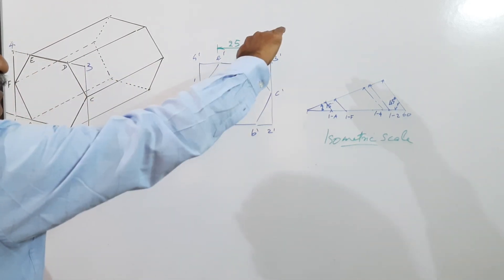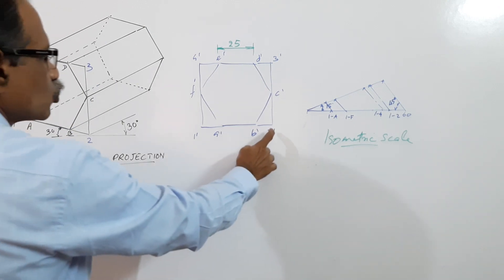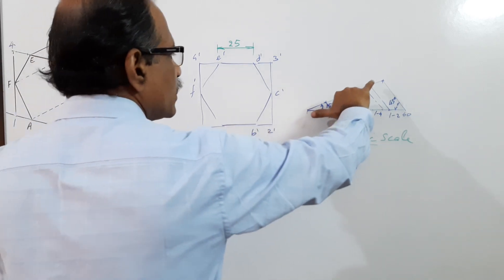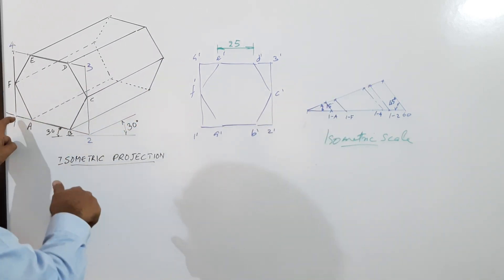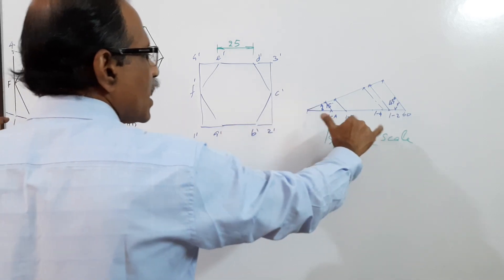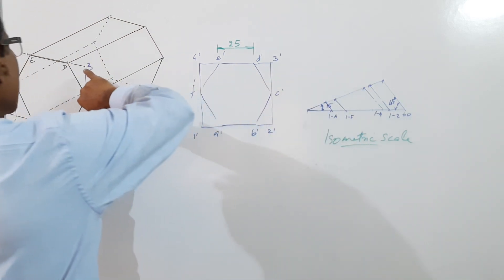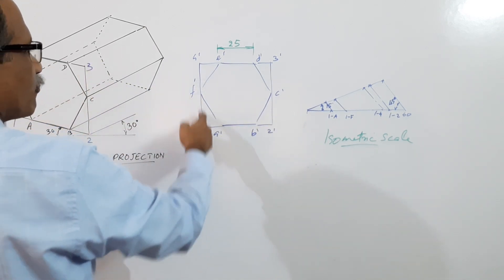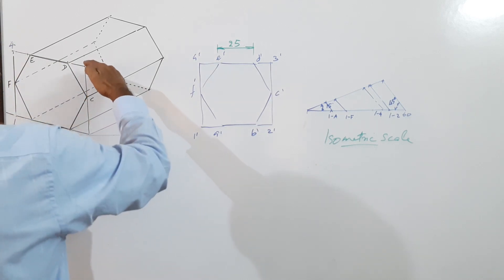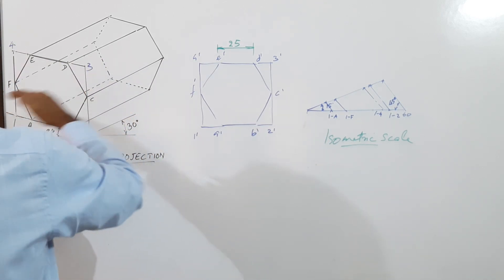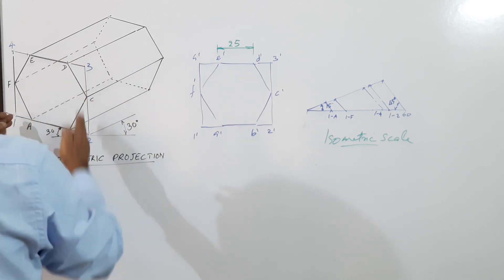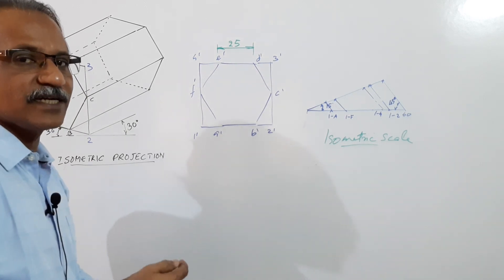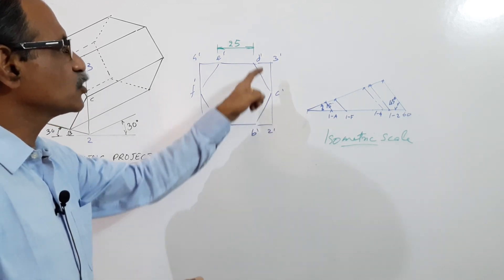Draw the 30-degree axis. Take the distance ISO 1-2 and mark to this side — you get point 1. Take the distance of ISO 1-4 and mark here — you get point 3. Through point 3, draw a line parallel to this axis; through point 1, draw a line parallel to this axis — you get point 4. So 1, 2, 3, 4 is the isometric projection of 1-dash, 2-dash, 3-dash, 4-dash.